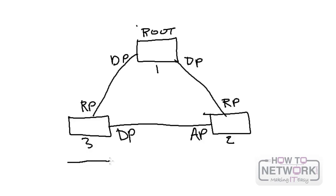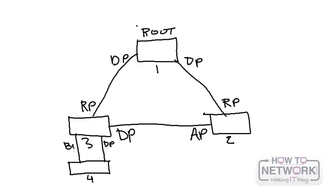Connected next to switch three is switch four. Switch three will have a designated port but will also have a backup port. A backup port is a redundant path to a segment where another bridge port already connects, and it applies only when a single switch has two links to the same segment.